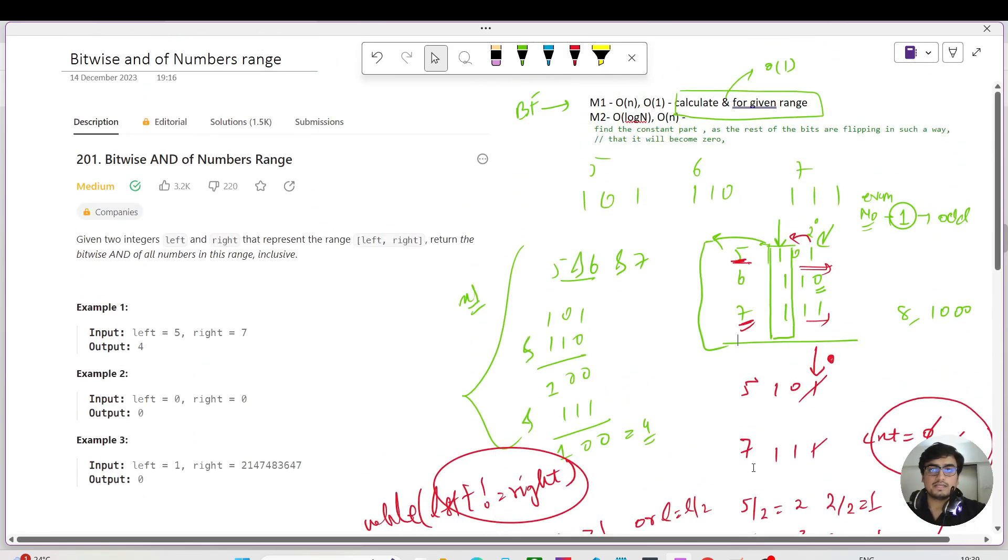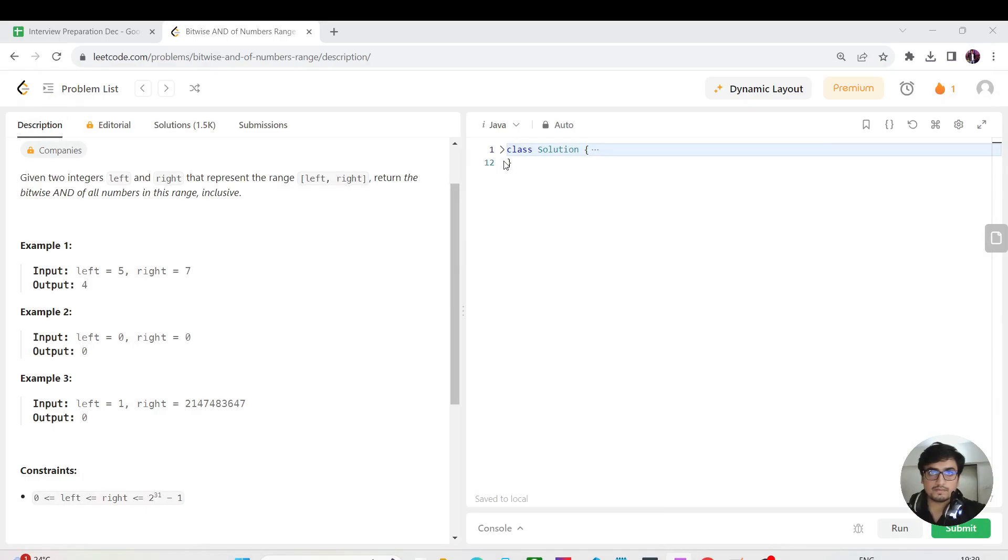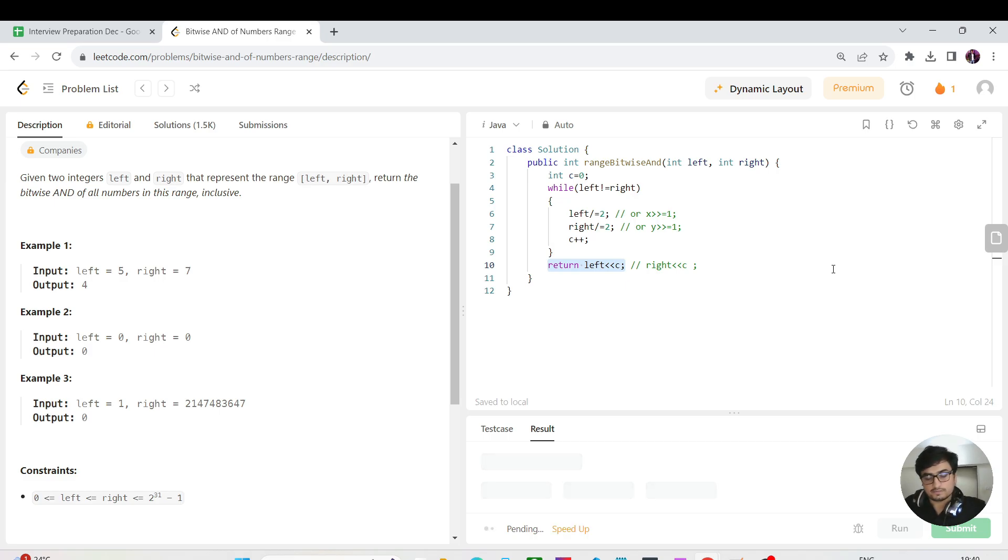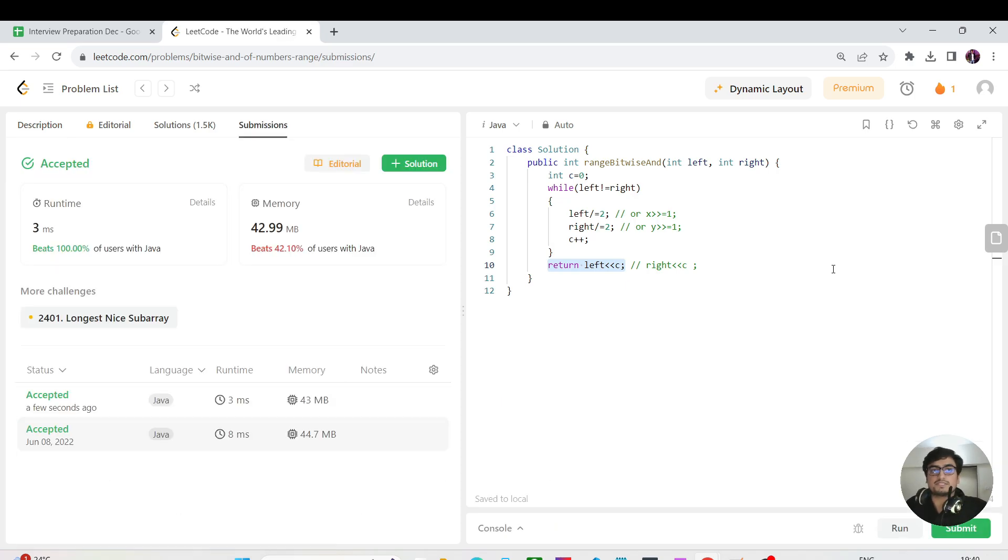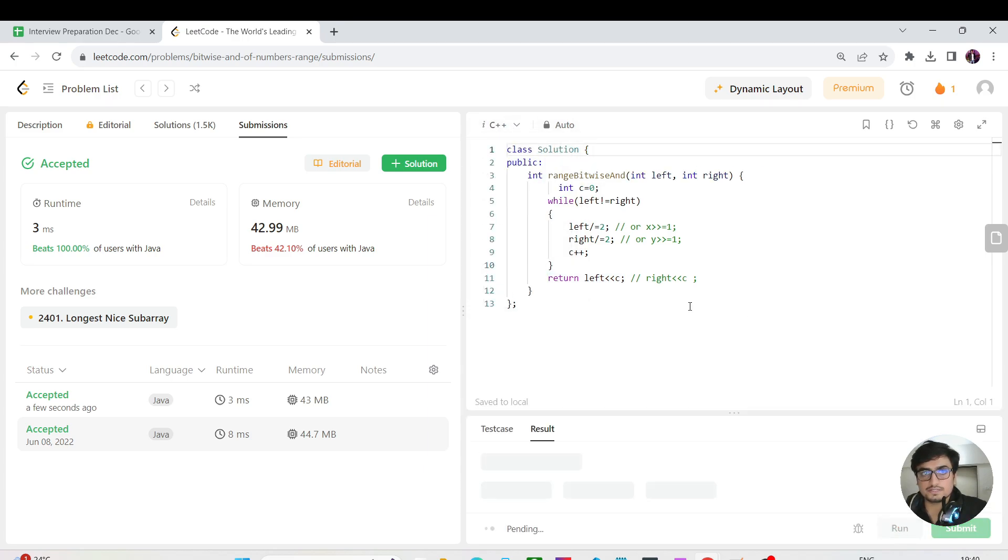Let's switch to the code. In Java, while left is not equal to right, we right shift both numbers (or divide by 2) and increment count. At the end, we return either left << count or right << count—both are the same. Time complexity is O(log n) and space complexity is O(1). The same code works in C++ as well. Let me hit the run button.